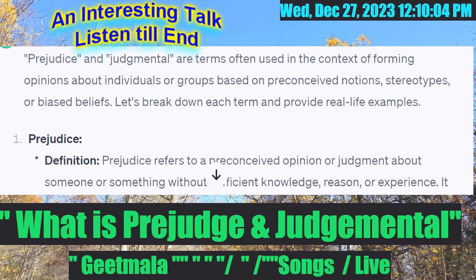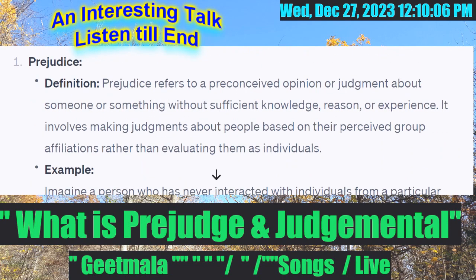Number one: prejudice. Prejudice refers to a preconceived opinion or judgment about someone or something without sufficient knowledge, reason, or experience. It involves making judgments about people based on their perceived group affiliations rather than evaluating them as individuals.